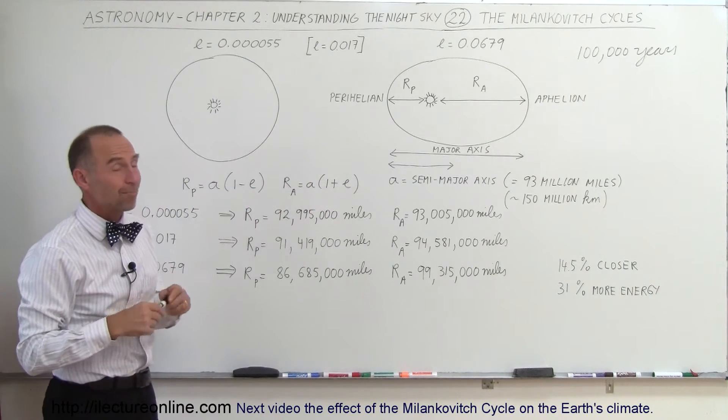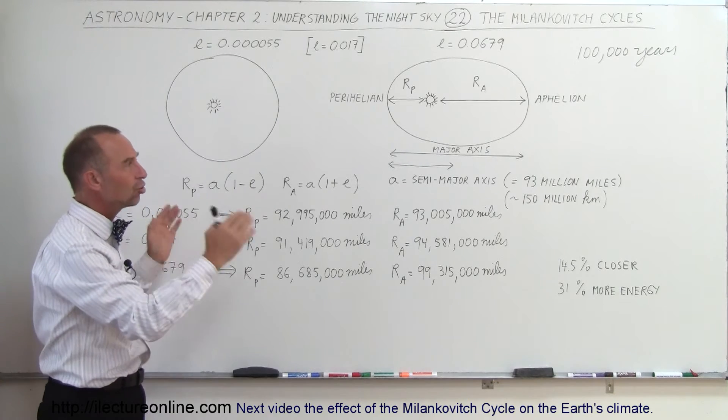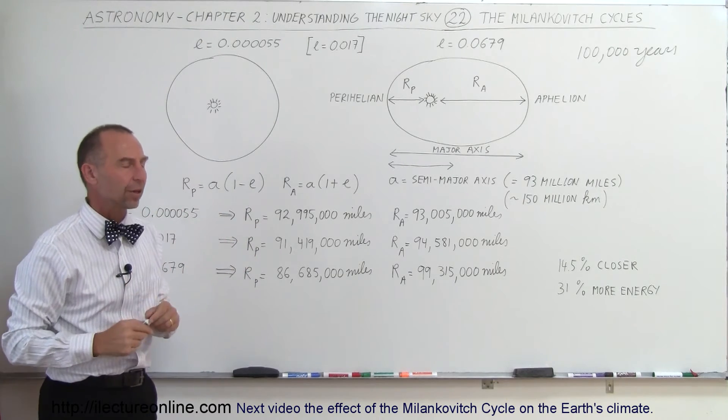Now, what does that mean, 100,000-year cycles? Well, there's some other cycles involved in that as well, but on average, the major changes to the orbit will be in about 100,000-year cycles.